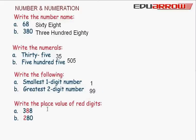Write the place value of red digits: 388, the place value of 8 is 80. And 280, the place value of 2 is 200.